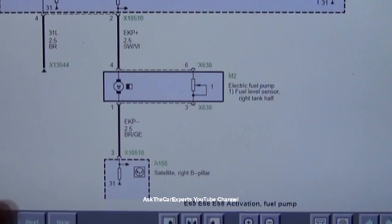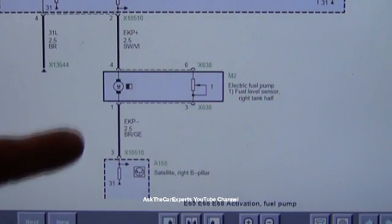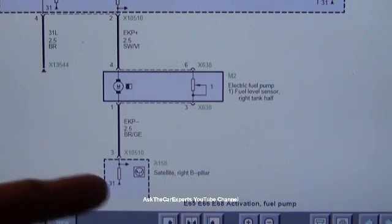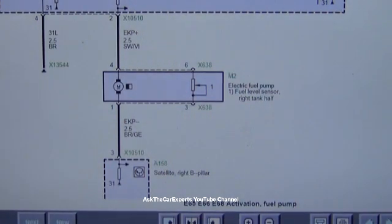If you see right here, your ground is also that B pillar satellite. So that B pillar satellite is controlling both power and ground. Check between pin 1 and pin 3 at the satellite B pillar right. Pin 1 is at the fuel pump ground and pin 3 is the activation side.